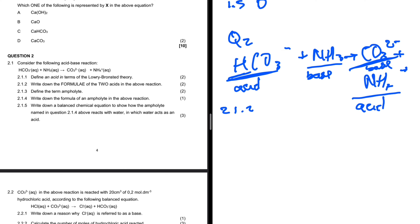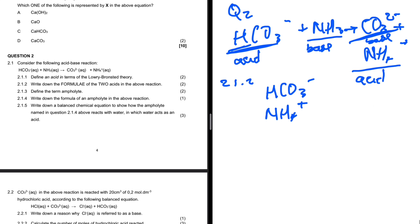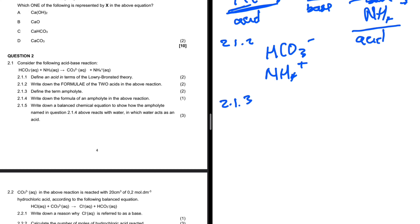Therefore the formula of the two acids in the above reaction will be HCO₃⁻ and NH₄⁺. Question 2.1.3 says define the term ampholyte. An ampholyte is a substance that can act as both acid and base.